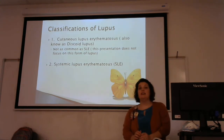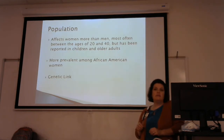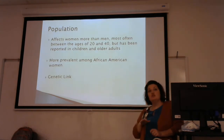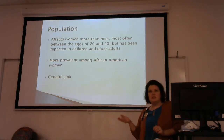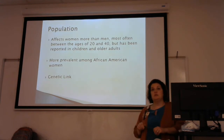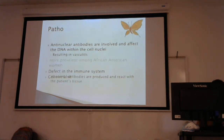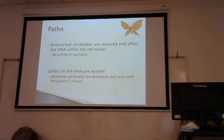SLE is more common in women between the ages of 20 and 40, and more prevalent among African American women. There have been cases in men and children, but primarily it's African American women ages 20 to 40. There is a genetic link, so you'll often see this run in families. The person has a defect in their immune system where the immune system is unable to determine self versus non-self cells, so it triggers inflammation.